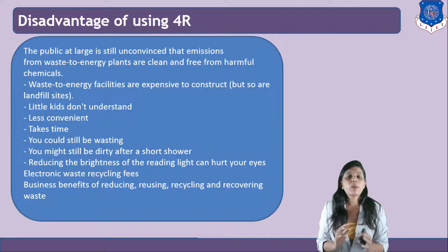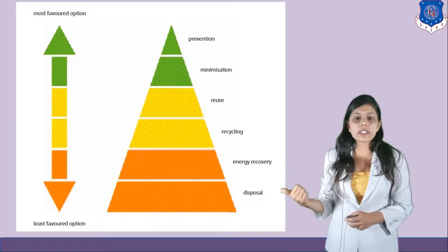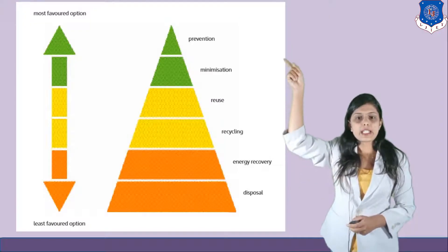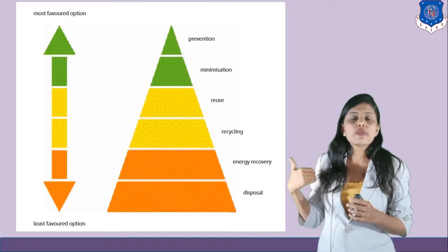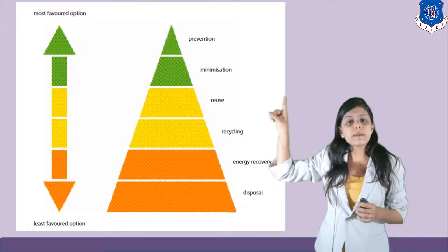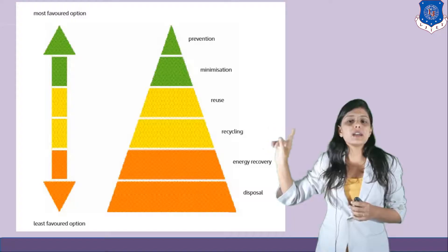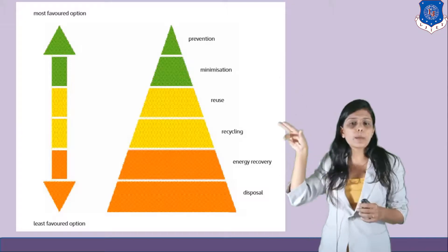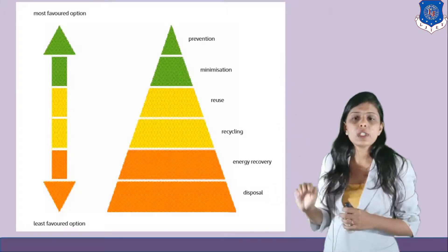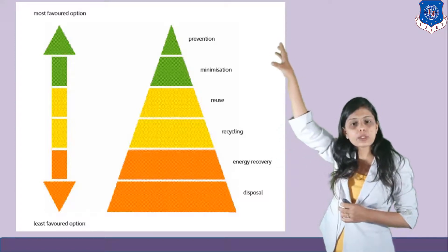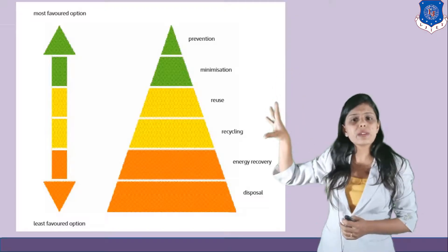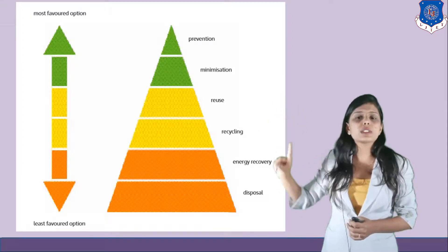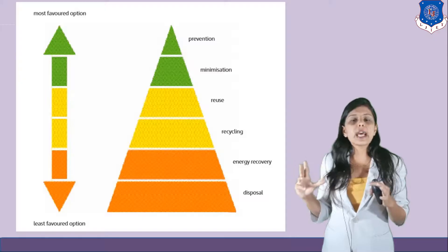Despite the barriers, utilizing this concept is very important to conserve resources. In the waste management hierarchy, minimization and prevention are the most favored options, followed by reuse and recycle. Energy recovery and disposal are the least favored options. So first think of reuse and recycle, and only if those are not possible should you consider energy recovery, and only as a last resort should you dispose of the waste.